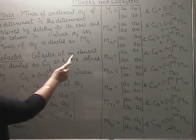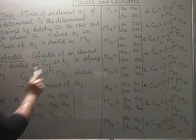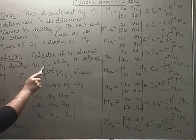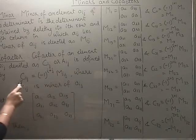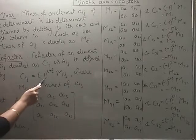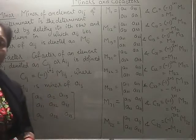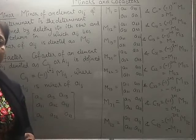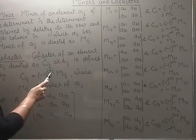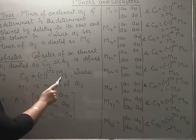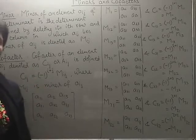Then there is cofactor. Cofactor of an element aij, denoted as capital C or capital A with subscript ij, is defined by Cij equals minus 1 to the power i plus j, times Mij. So the cofactor can be equal to the minor or the negative of the minor, depending on the sum of i and j. If the sum is even, cofactor equals the minor; if the sum is odd, the cofactor is the negative of the minor.